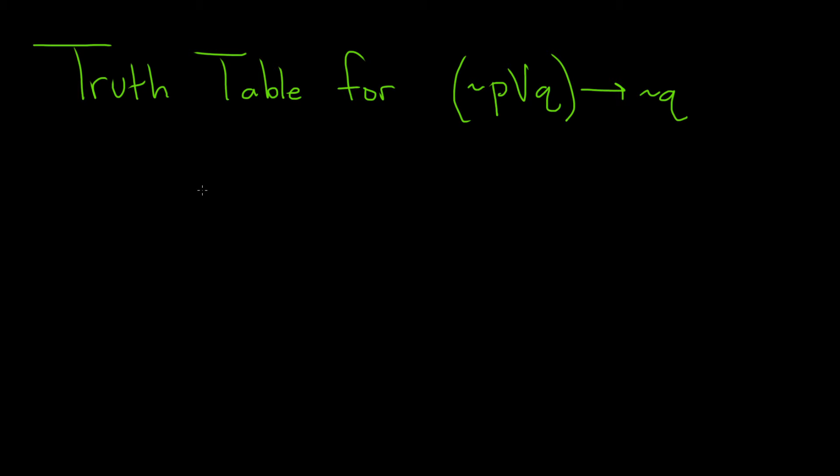In this problem, we're going to construct a truth table for this statement. We'll start by listing all the possible truth values for P and Q. So we have P and we have Q.